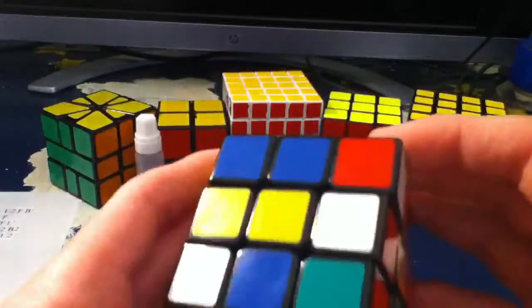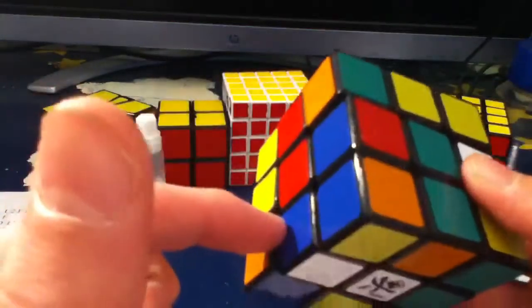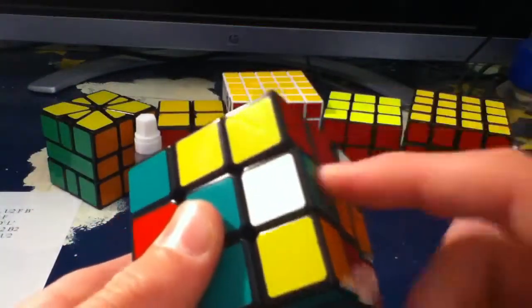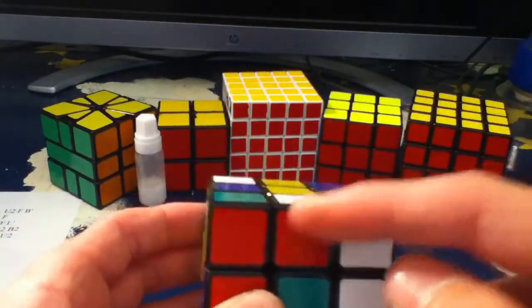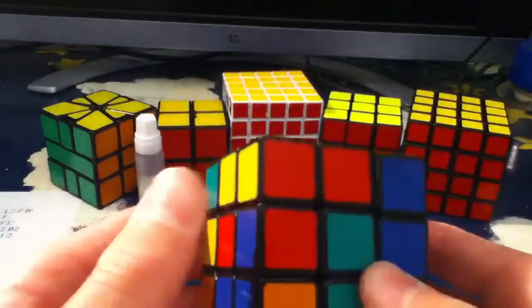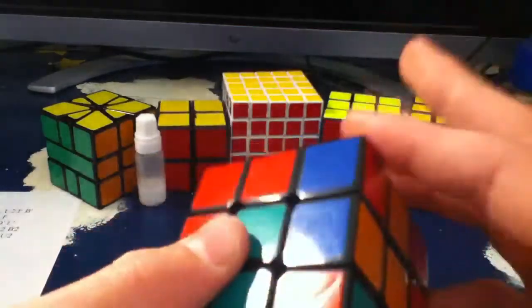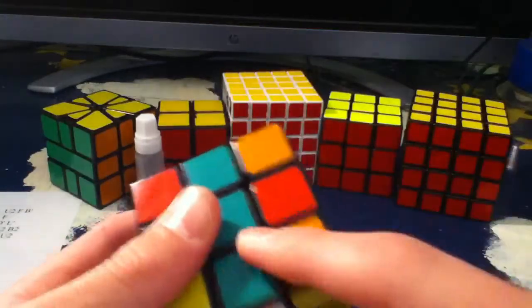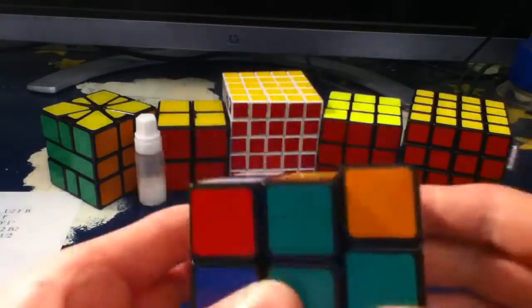Okay, so this is a pretty easy cross. So I see that I have the white-blue here, white-red here, and white-green here. So I'm going to bring this in its correct place, solve the white-green, solve the white-red, align it with the centers, and then solve the white-orange.